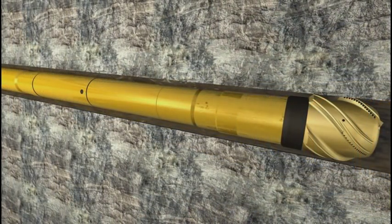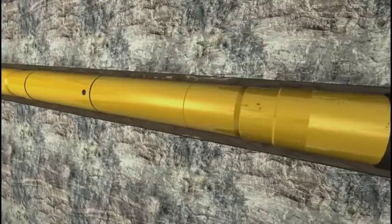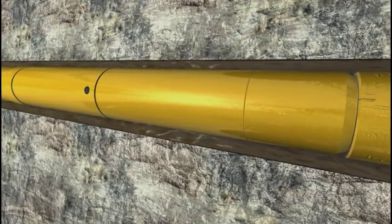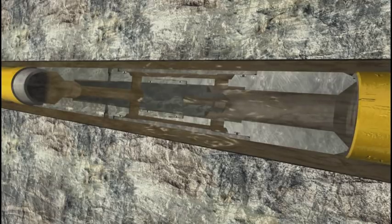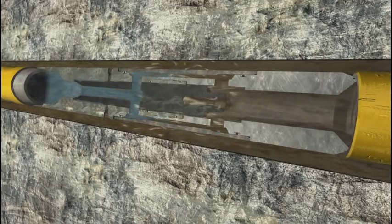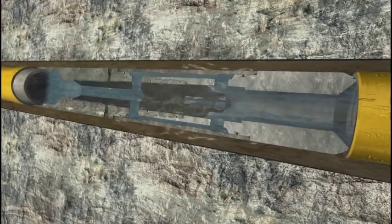The wellbore isolation valve is in the open position allowing circulation through the system. The sleeves are in the closed position. Upon reaching the desired depth with the completion liner, displacement operations can begin.